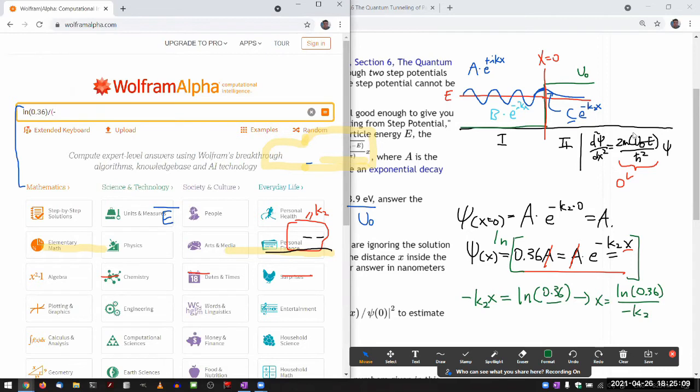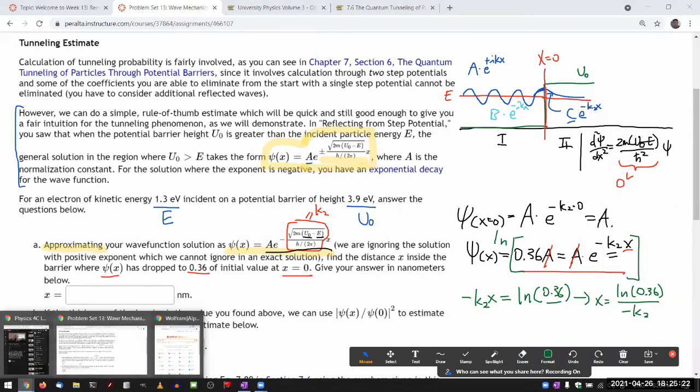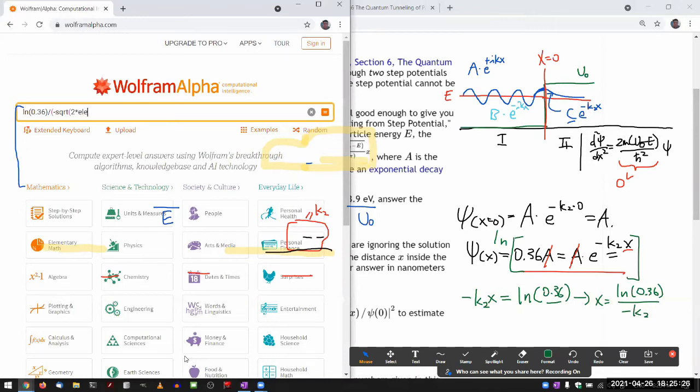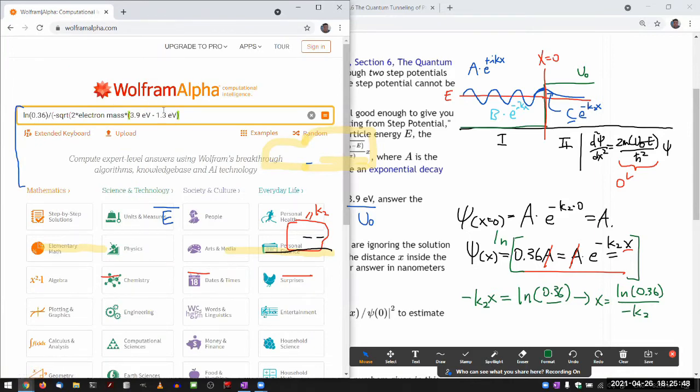It asks, find the distance x inside the barrier where psi of x has dropped to 0.36 of initial value at x equals 0. So this is a rather simple calculation. Psi of x equals 0 is just going to be A. So find the x such that psi of x is 0.36 A, which equals A times e to the minus K2x. I have this equation here, cancel out the A's. I need to solve for x. Taking natural log of the entire thing, I get minus K2x equals natural log of 0.36. This gives me some confidence because this number is less than 1. Natural log of number less than 1 is going to be negative. So minus signs will cancel out. So I get x equals natural log of 0.36 divided by minus K2.